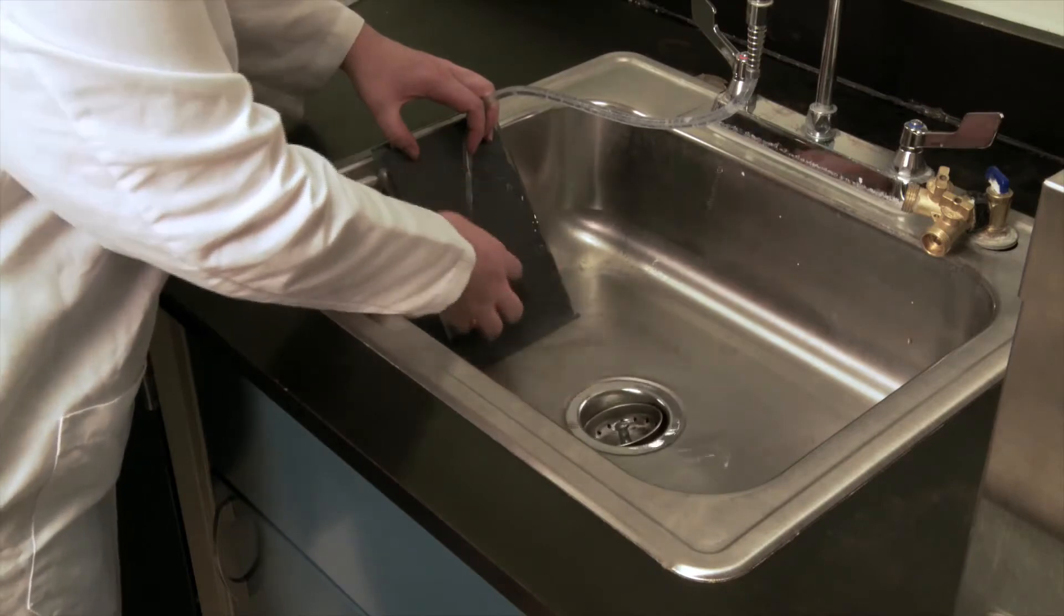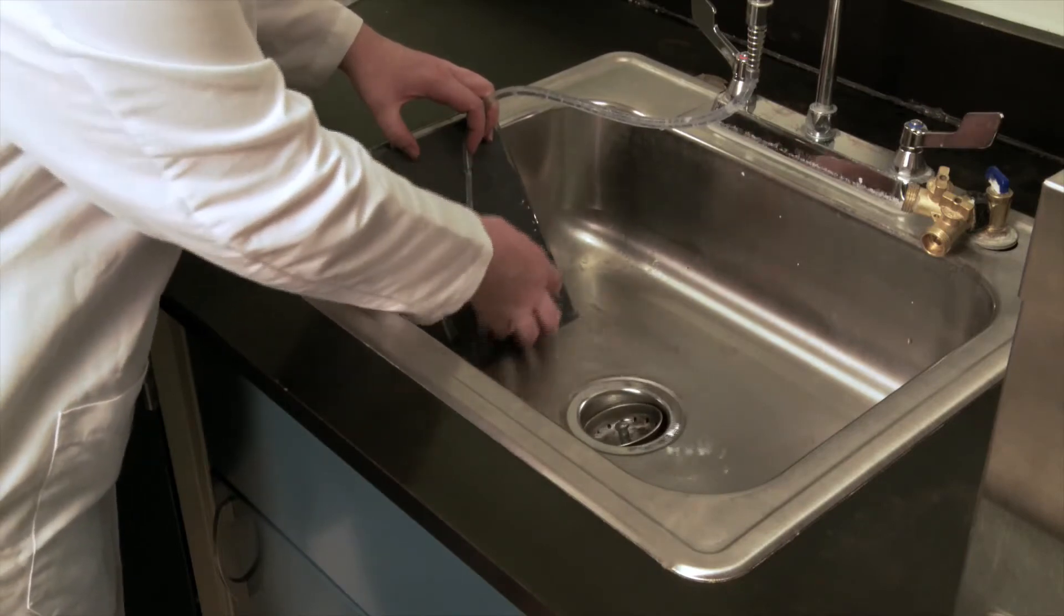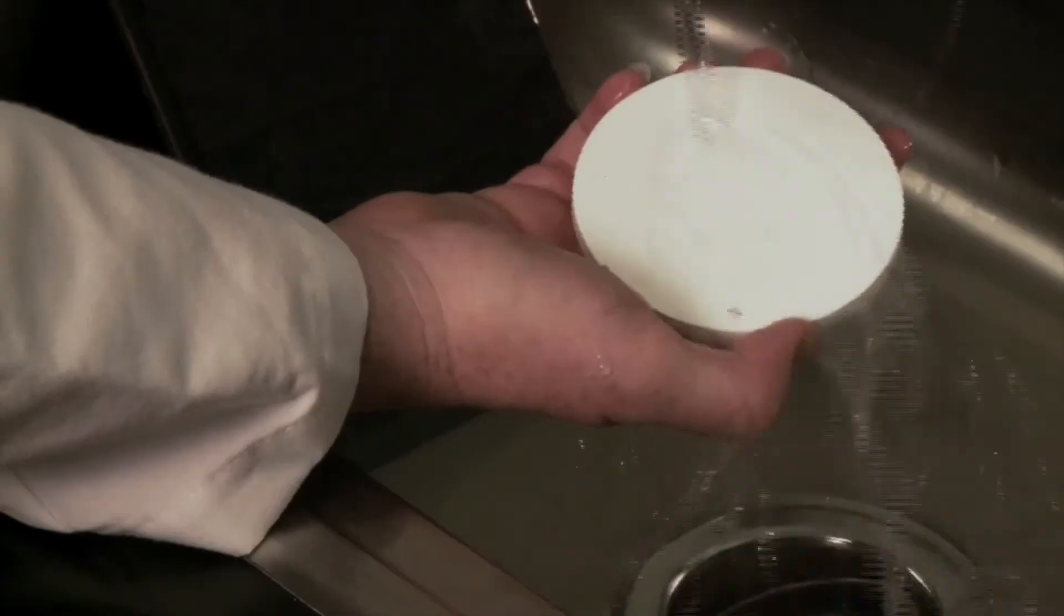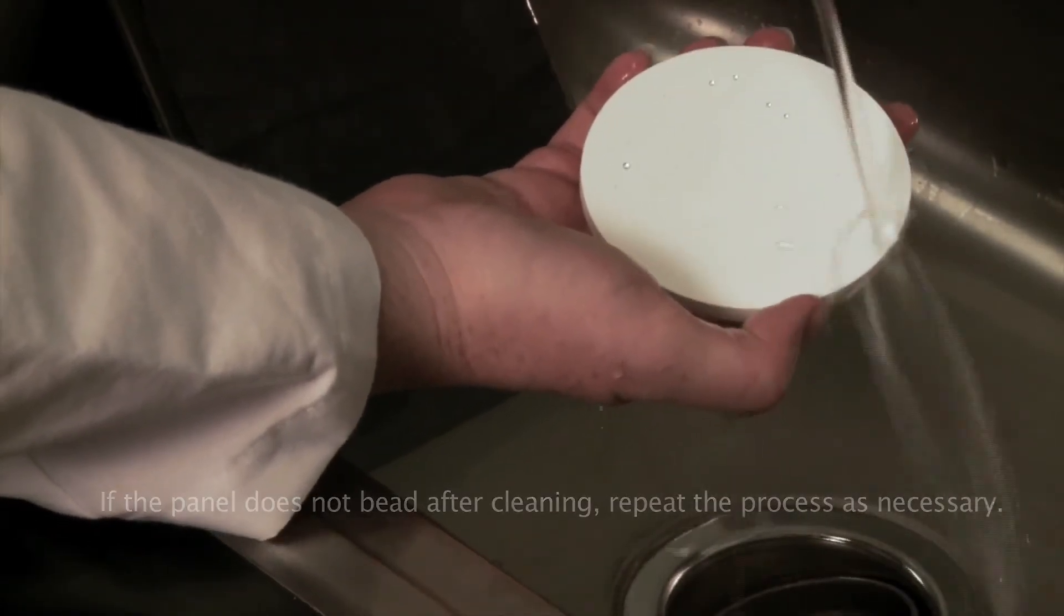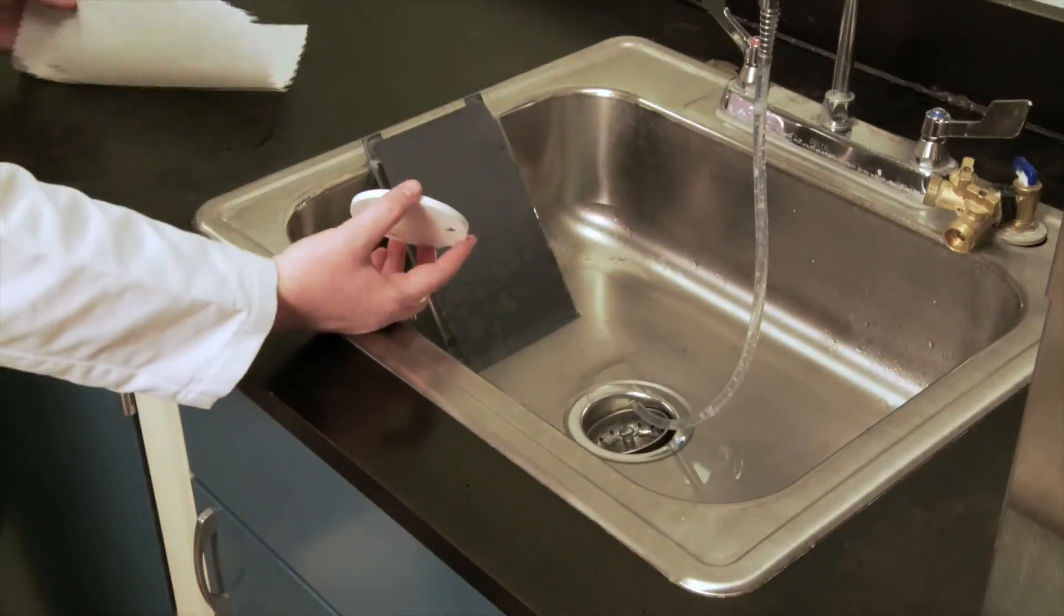When a Spectralon panel is clean, the surface should be hydrophobic. Check to make sure it is clean by running it under the flowing water and look for areas where the water saturates the panel instead of beading up and running off.